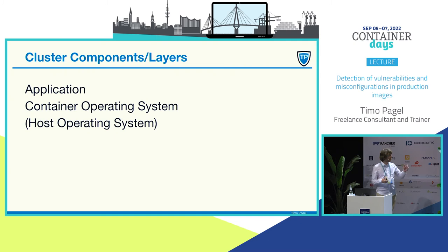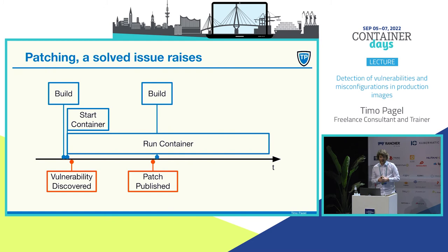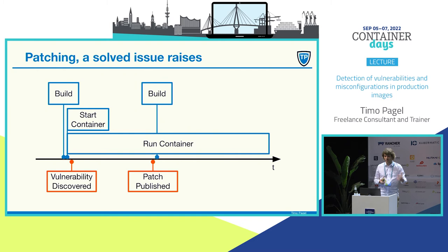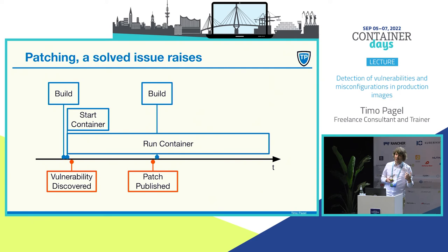We have different layers — we also have the container operating system and the host operating system. The host operating system I can't scan with these tools, so I'm focusing on the container operating system and the application layer inside of an image. Just to help you understand how known vulnerabilities work — you have a build, then you start a container. Maybe you have another build but don't deploy it. In parallel, someone discovers a vulnerability, and after some time there is a patch published. So it's independent from the developer. What I discovered is that it's very nice to know how old a container is. I do that by taking a look at the creation time. It works always, except when you have a reproducible image — then the creation date will be set to 1st January 1970.